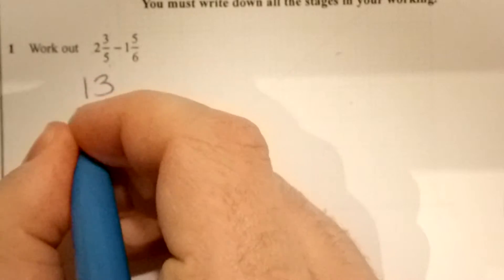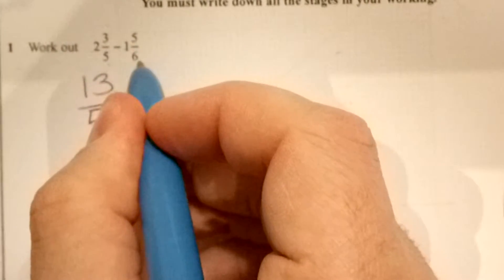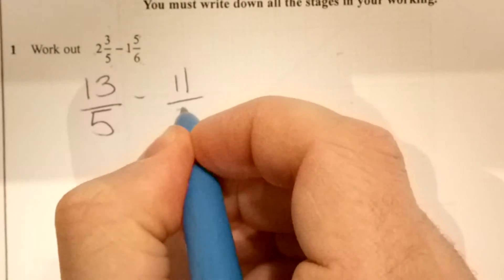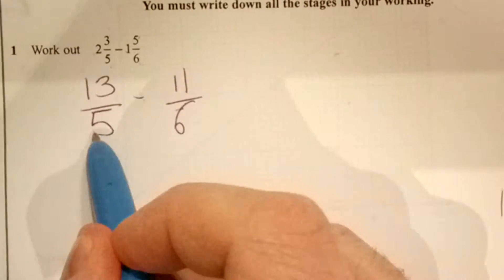3 which makes it 13 fifths. This one here you do 1 times 6 which is 6 add 5 which will make it 11 fifths, sorry 11 sixths. Now we can't just subtract them straight away because they've got different